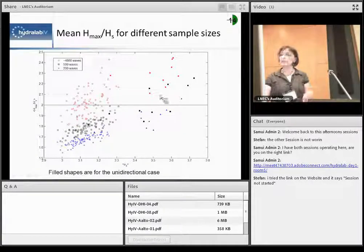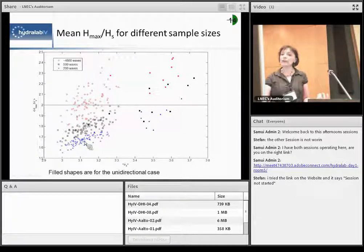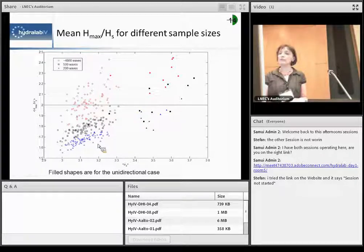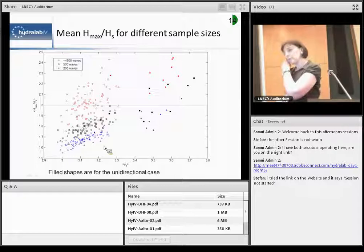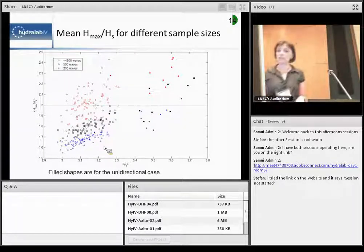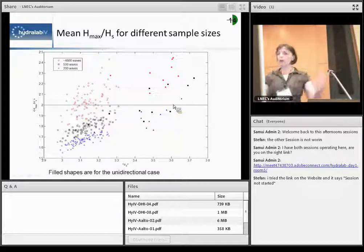So we see that actually the number of waves in the record could influence that relationship. The other things that we see here are two different parts is that here we have multi-directional waves down here. And here we have the unidirectional wave. So this kind of brings us to a slightly different thing.